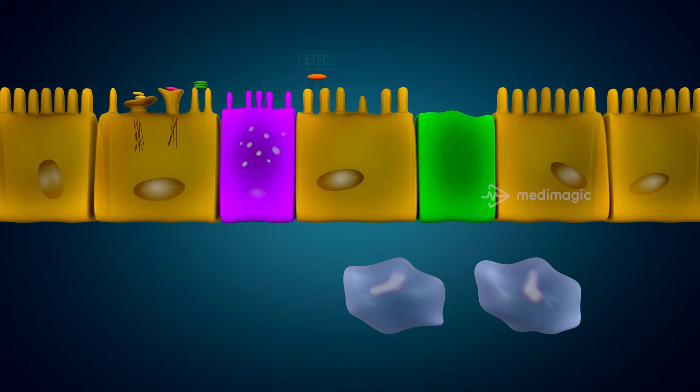Enterotoxigenic E. coli or ETEC uses colonization factors CFs for attachment to host intestinal cells.